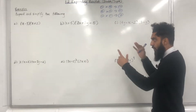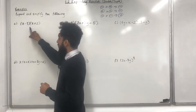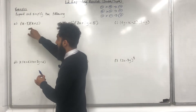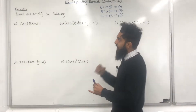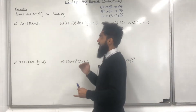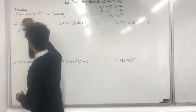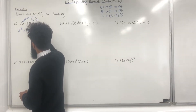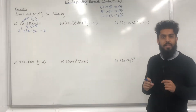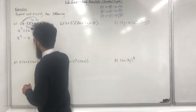Expand and simplify the following brackets — parts A, B, C, D, E and F. Starting with part A, we have double brackets. The first term is x, the second term is negative 3. We multiply x by each term in the second bracket, then multiply negative 3 by each term in the second bracket. x times x is x squared; x times positive 2 is positive 2x; negative 3 times x is negative 3x; negative 3 times positive 2 is negative 6. Simplifying by collecting like terms: x squared minus x minus 6.